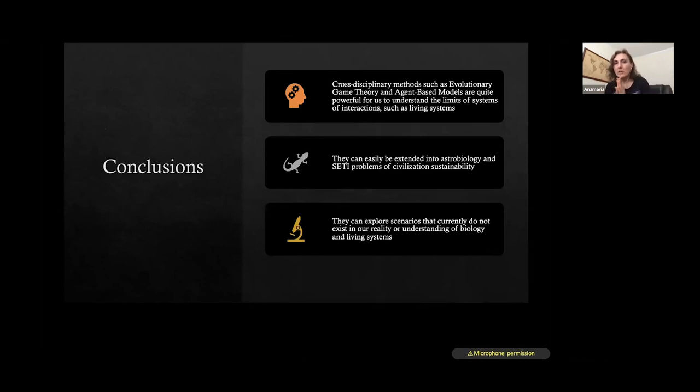And some conclusions we can draw here is that cross-disciplinary methods, such as evolutionary game theory, agent-based models are quite powerful for us to understand the limits of systems of interactions, such as living systems, that can be easily extended into astrobiology and some problems, set the problems of sustainability of civilizations. And they can explore scenarios that currently do not exist in our reality or our current understanding of biology and living systems. And yeah, thank you.